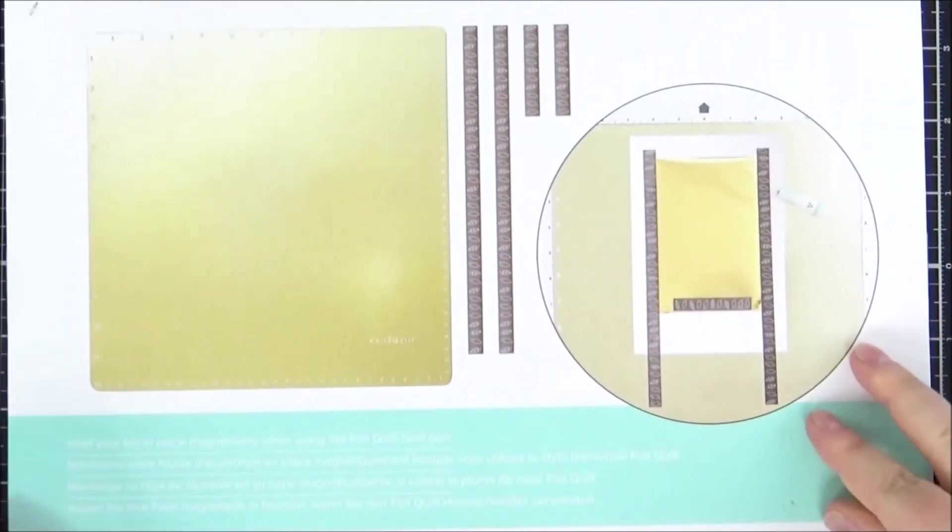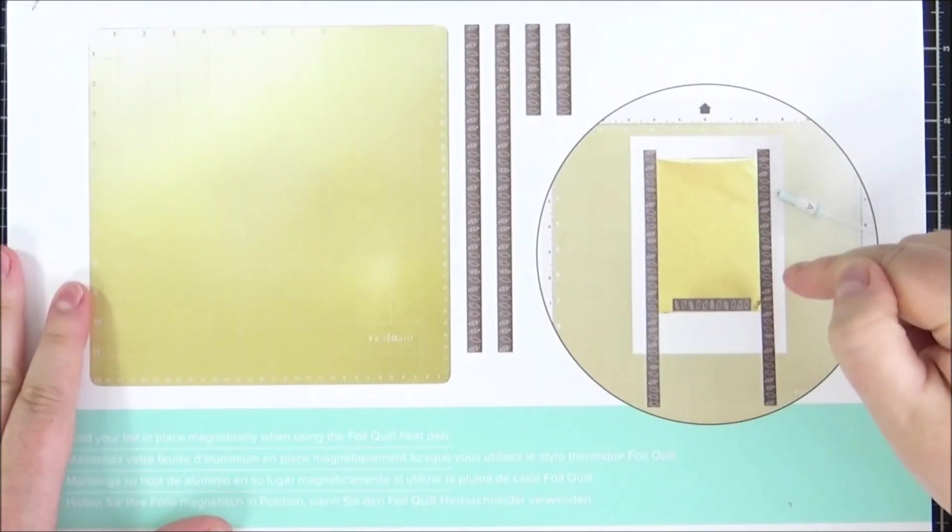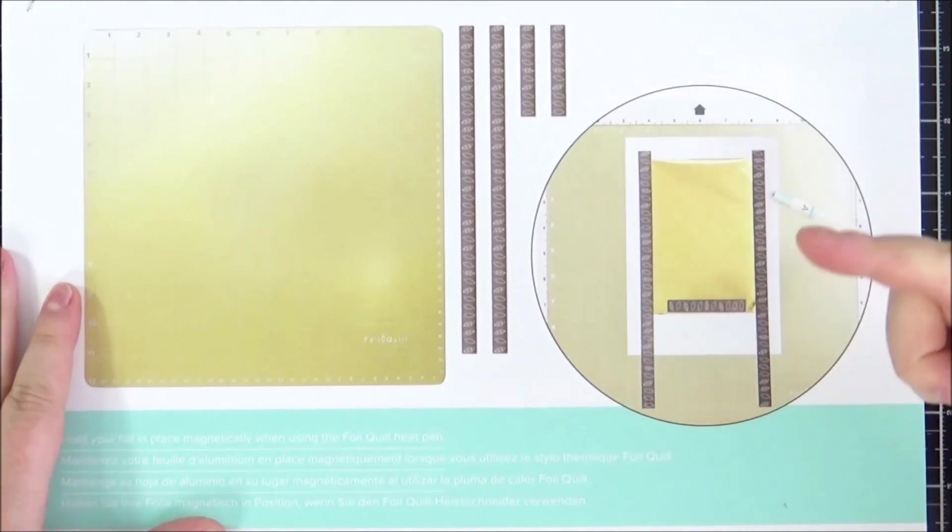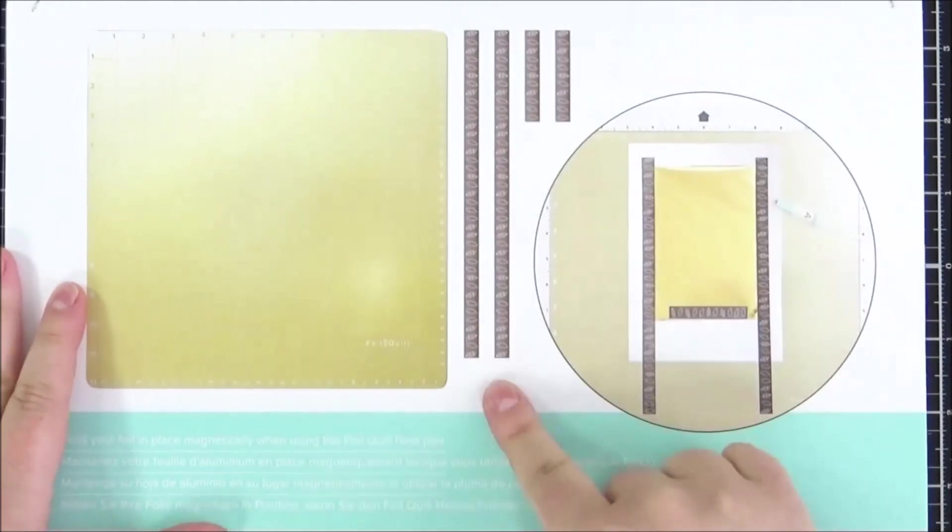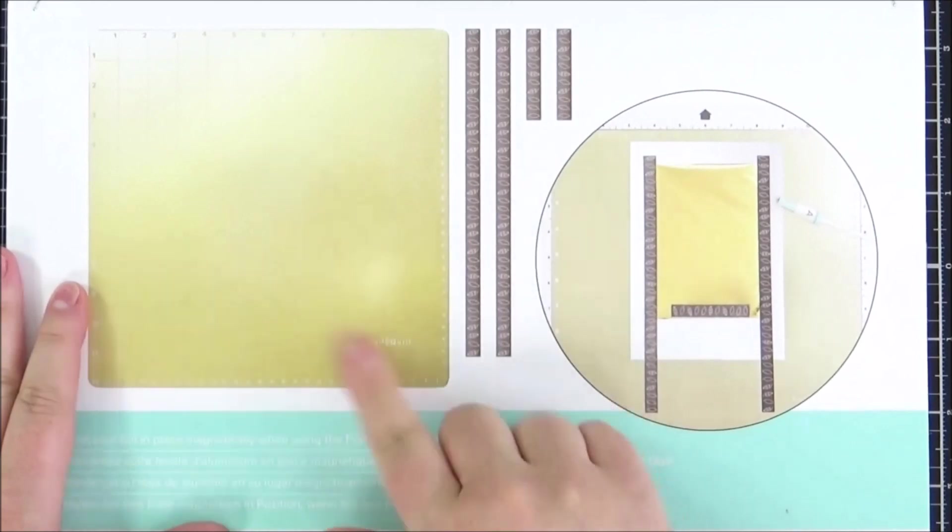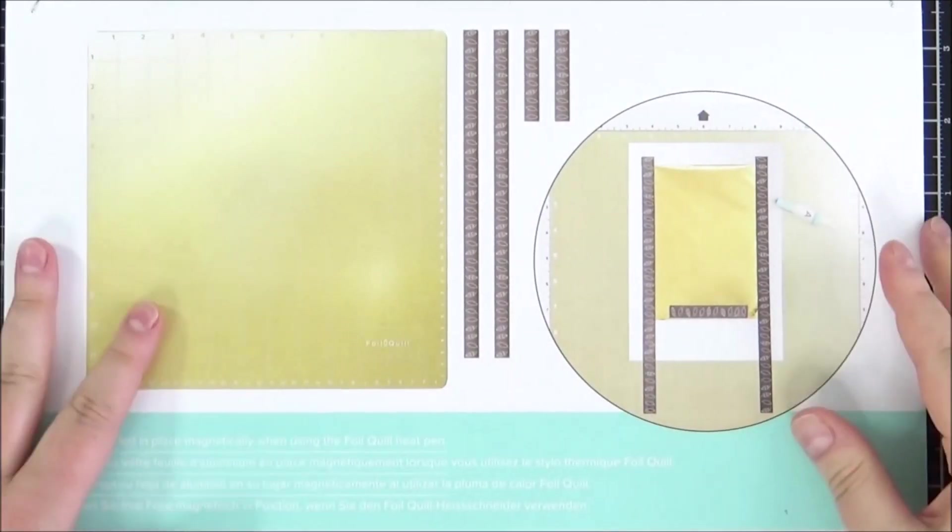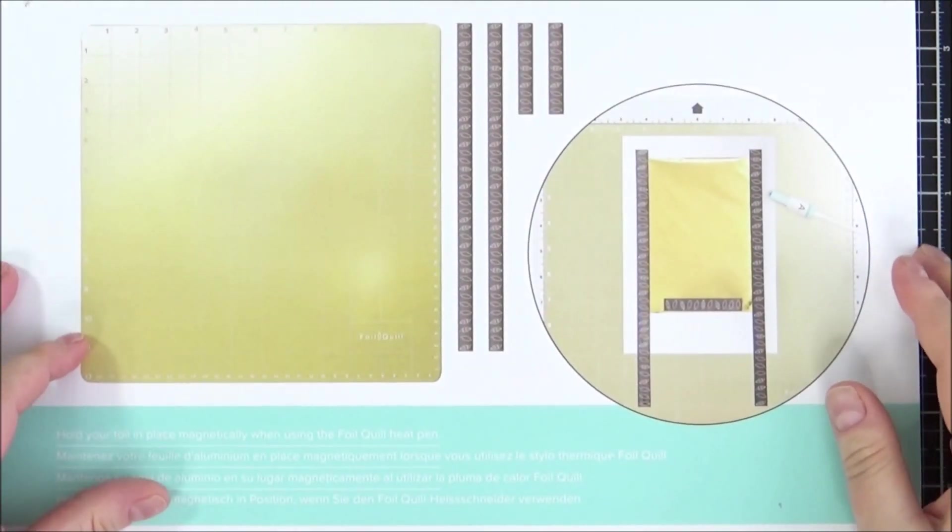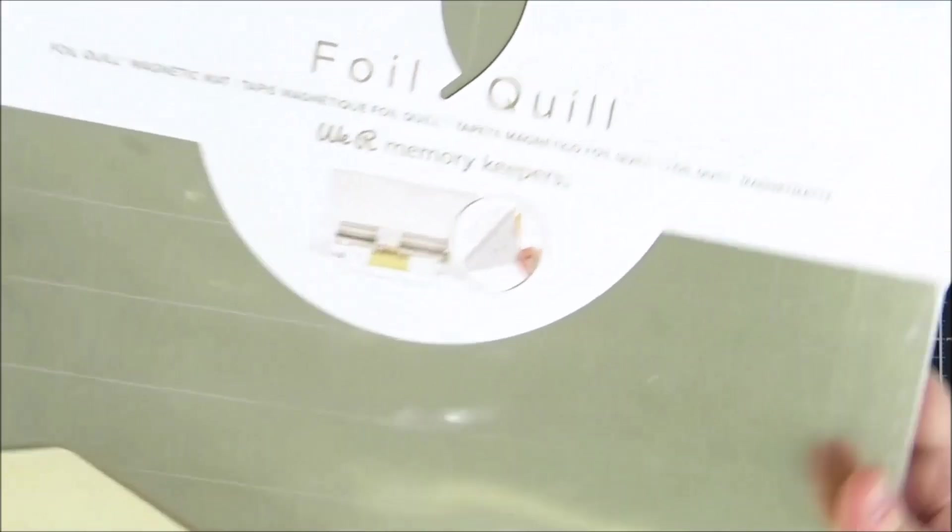So before this kind of was invented you would have to stick down the foil with washi tape but you can stick it down with magnets now and it sticks to the magnetic mat so hopefully that will work out a little bit better than the washi tape so I'm looking forward to trying that out.